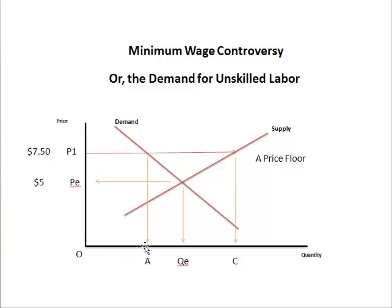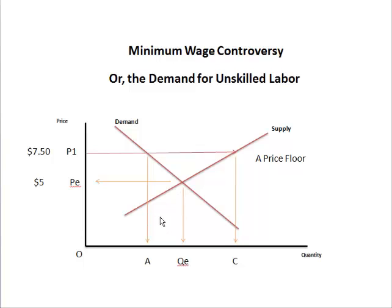This rectangle here was their original total revenue — now you add this rectangle on top of it. But here's the big but: this OA group of people benefits at this other group's loss. The AQ number of people just lost their jobs — they became unemployed.